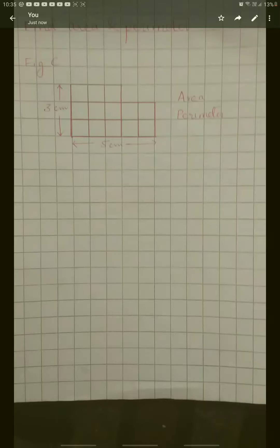Welcome children. Here I am going to explain how to find the area and perimeter of an irregular shape. You can see this figure, and this figure is an irregular figure. What we have to do here is find the area and perimeter of this irregular shape.